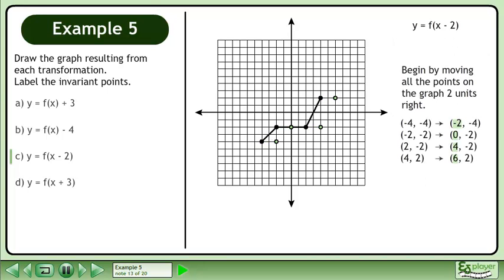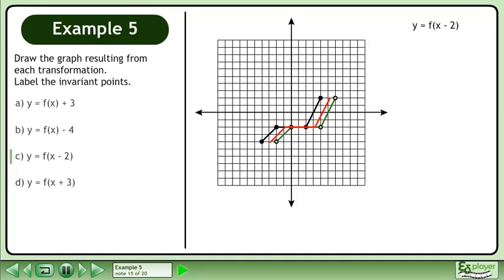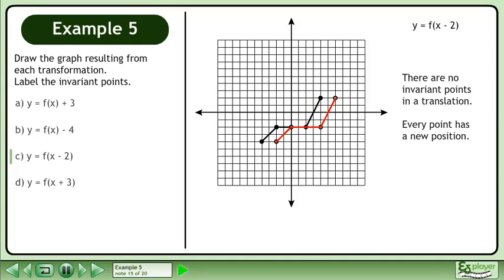Begin by moving all the points on the graph 2 units right. Next, connect the dots to complete the graph. There are no invariant points in a translation — every point has a new position.